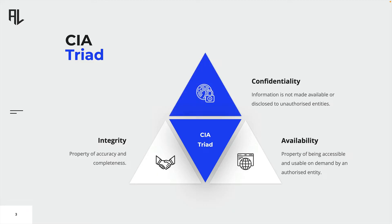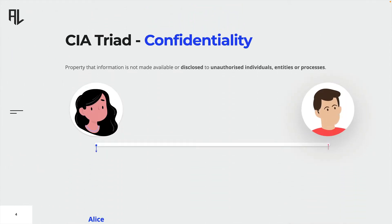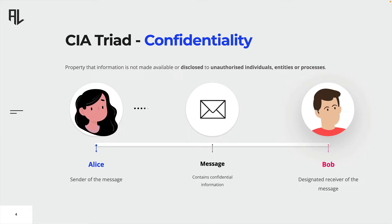Let's have a look at confidentiality first. Confidentiality is the property that information is not made available or disclosed to unauthorized individuals, entities, or processes. Let me explain this concept using a simple example centered around Alice and Bob. Alice is about to send a message to Bob. However, the message she wants to send contains confidential information — in other words, she does not want anyone other than Bob to read it.